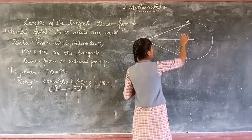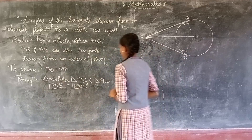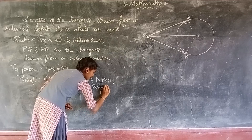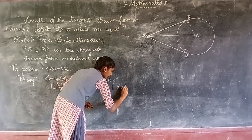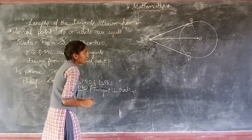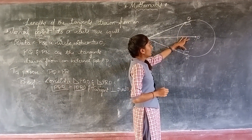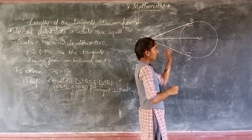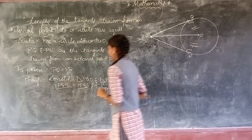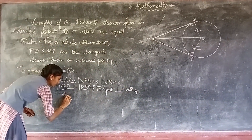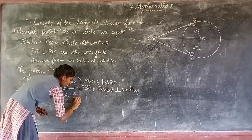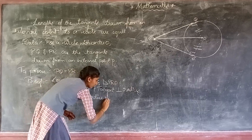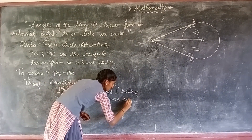So both angles are 90 degrees. The reason is that the tangent is perpendicular to the radius. Also, OQ is equal to OR because they are radii of the same circle.